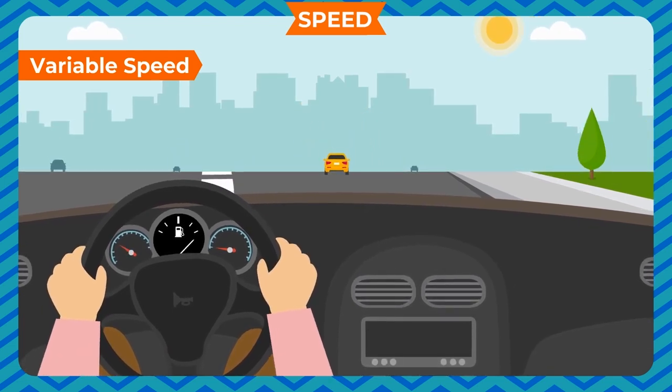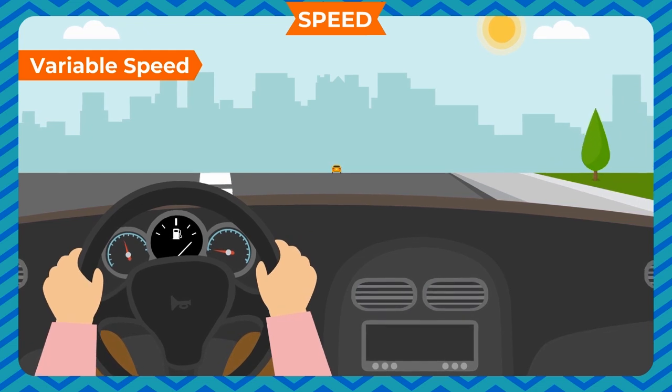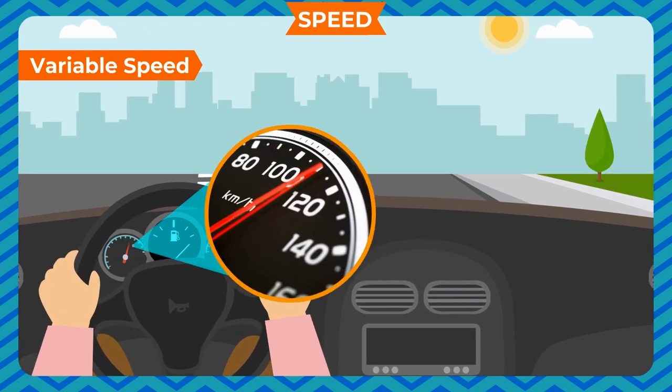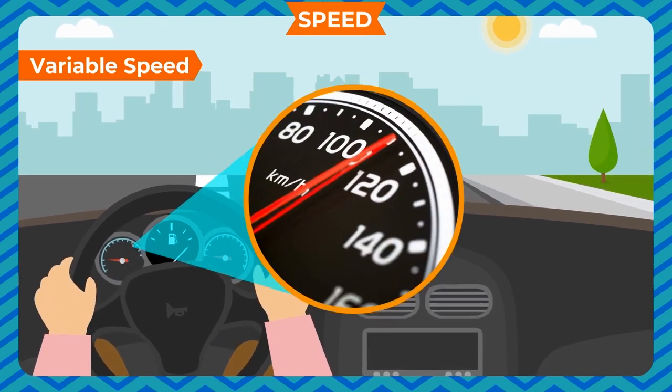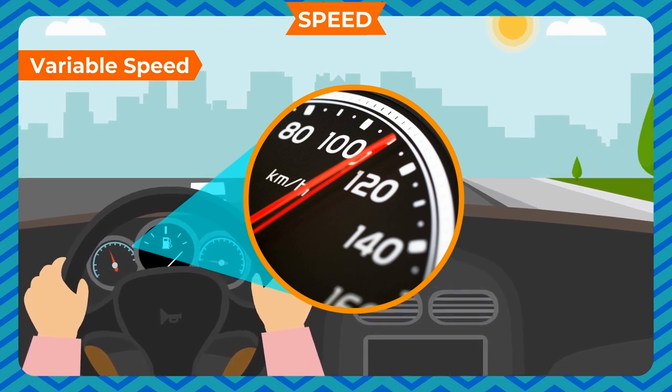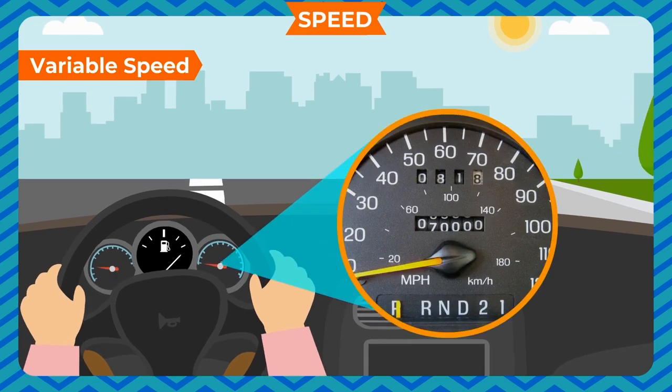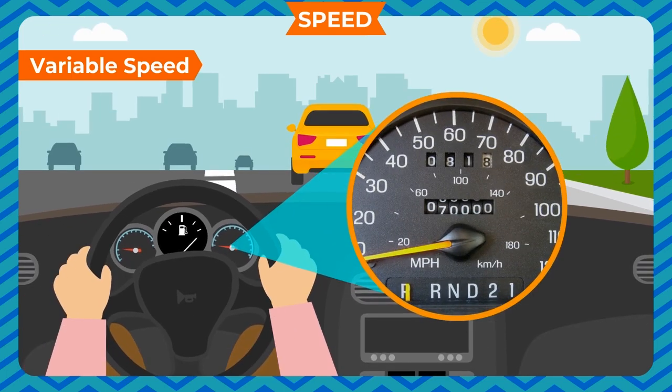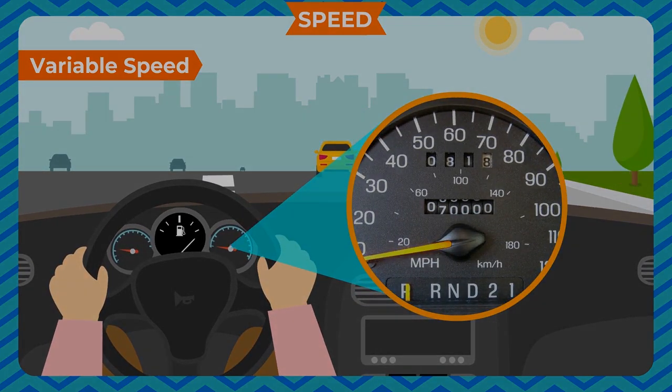Two kinds of meters are fitted on the dashboard of a car. One of the meters has kilometer per hour written at one corner. This is known as speedometer which measures the speed. There is another meter called odometer which measures the distance covered by the vehicle.